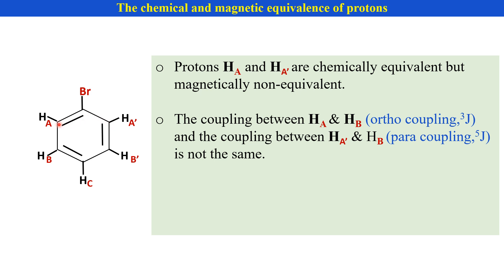But the coupling of HA with HB and the coupling of HA' with HB is not the same. The coupling between HA and HB is a vicinal coupling, ³J coupling, or ortho coupling. And the coupling of HA' with HB is a para coupling or ⁵J coupling.